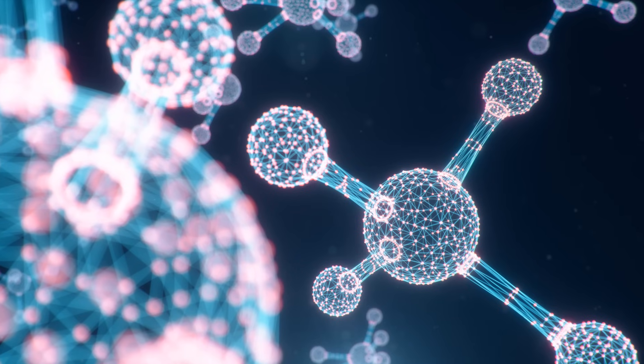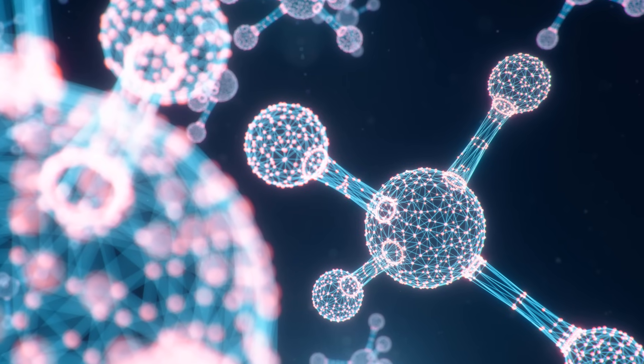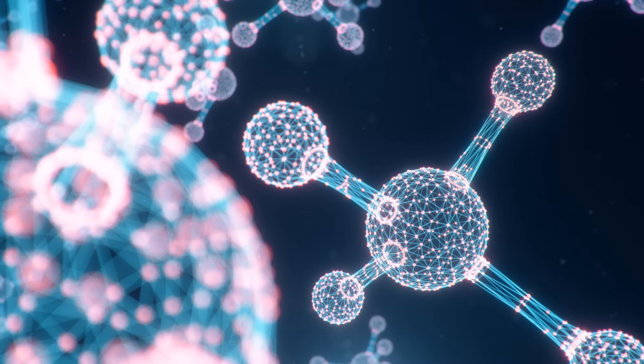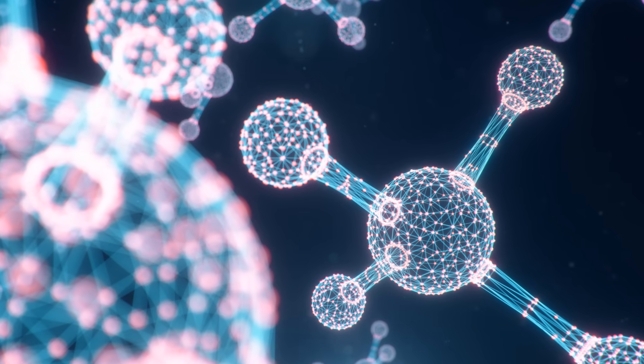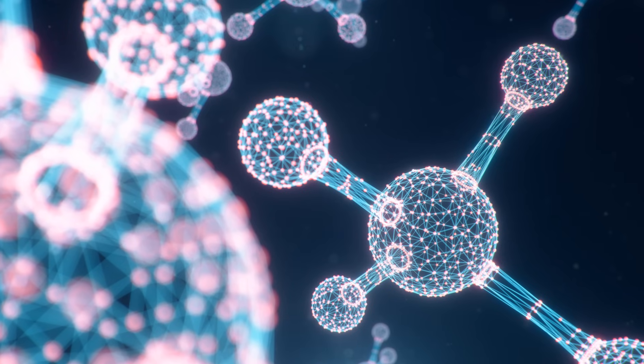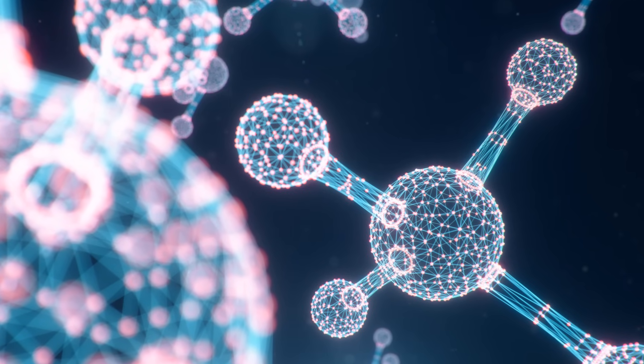If you could take all the atoms that make up every single human being on the planet, all 8 billion of us, and you squished them all together to remove all the empty space, it would be about the size of a sugar cube. That's right. All the solid stuff of every person on Earth could fit into a tiny box.